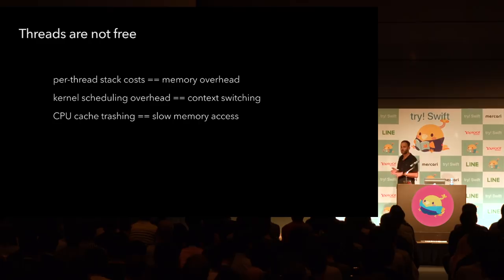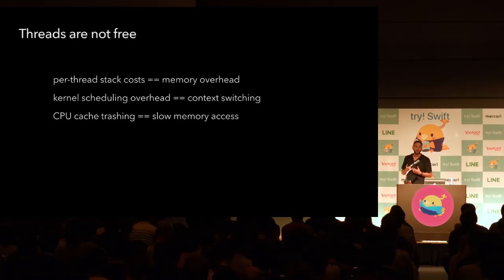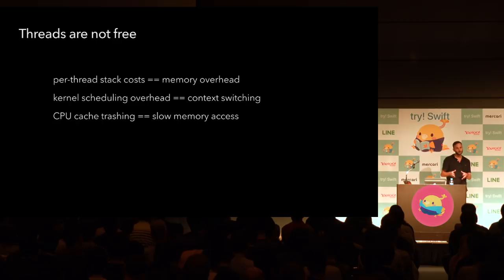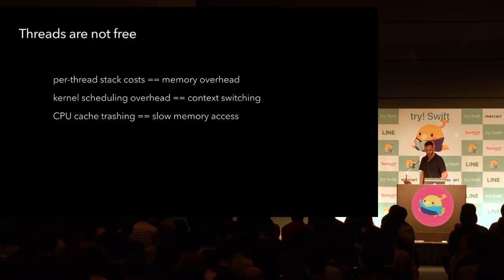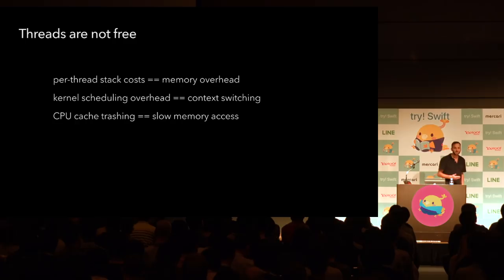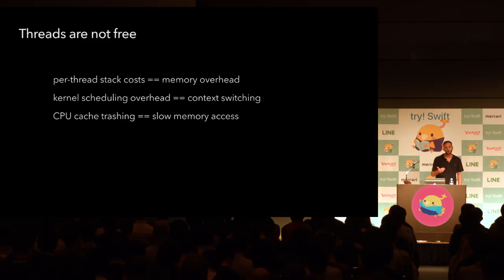Even if you ignore memory overhead — which you probably shouldn't in practice — there are other limitations. Every time the OS wants to make progress on another thread, it needs a context switch handled by a scheduler. Different scheduler implementations exist, but the point is: every context switch is not free. One of the worst results is that you trash the cache on the CPU core, so an operation that would normally be very fast is now slow because you're fetching from L1, L2, or L3 caches, or worst case, from memory itself.